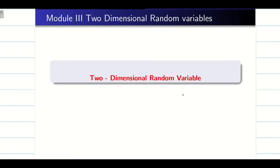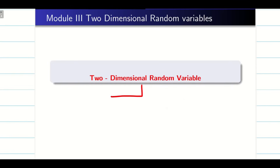Dear friends, in today's session we are going to see what is meant by two-dimensional random variable. In unit 1 we have learned what is meant by one-dimensional random variable. Here we are going to take a sample space S and associate it with two different random variables X and Y. In two-dimensional random variables, as usual, we are going to split into discrete random variable and continuous random variable.